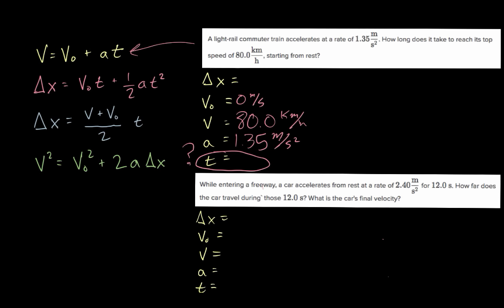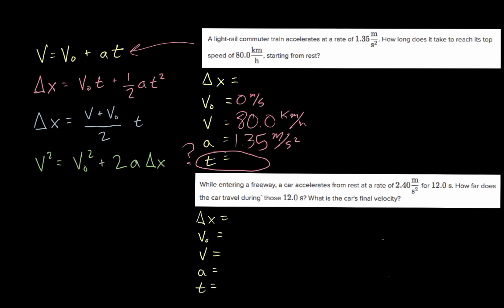For this video, we're not going to actually solve it — we're just going to go through another example of setting things up. So let's look at the next question: while entering a freeway, a car accelerates from rest at a rate of 2.40 meters per second squared for 12.0 seconds. How far does the car travel during those 12 seconds? And what is the car's final velocity? This one actually asks two questions, so let's focus on the first one to begin with and also identify what we know.